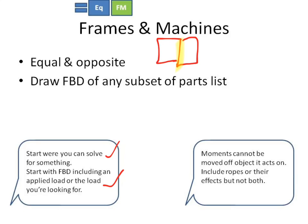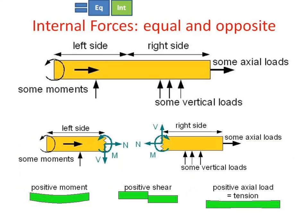As an aside, moments cannot be moved off the object that they act on. A moment is a free vector, but it's only free insofar as you leave it on the object you're considering. Don't move it from one part of the object to another. In terms of ropes, you want to include their effects or their actual physicality, but preferably not both.